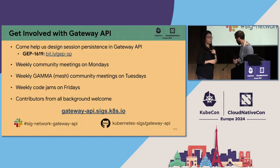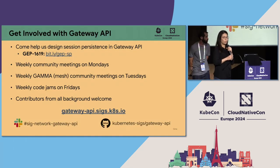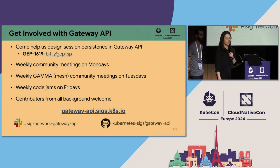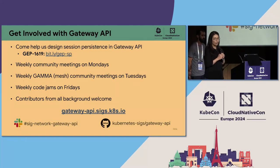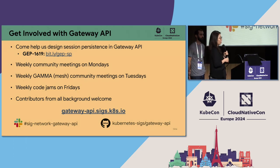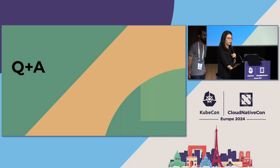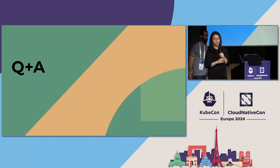That concludes our discussion on the path to implementing session persistence in the Gateway API. We'd love to get help and feedback on the current design — you can find it at the short link shown. We have weekly community meetings on Mondays, Gamma meetings on Tuesdays, and code reviews on Fridays. All contributors are welcome from all backgrounds. You can join our community Zoom call and send messages on the Slack channel. We have a few minutes for questions — thank you.